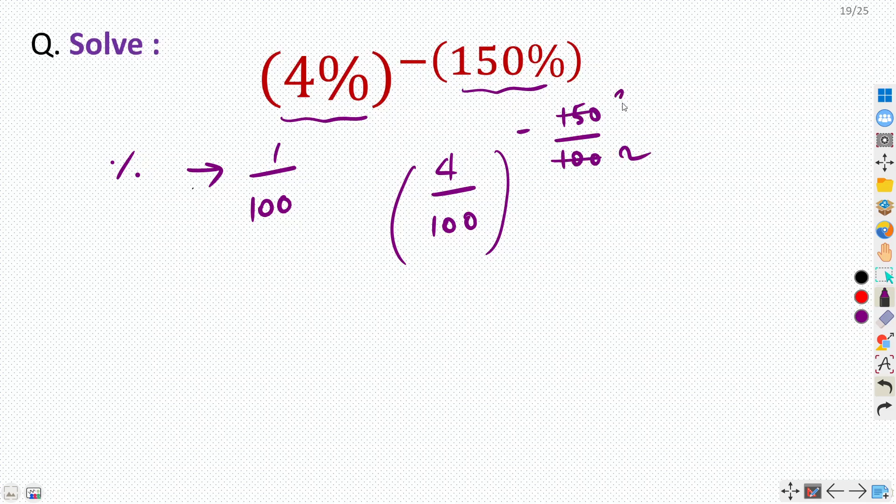So 50 into 2, 50 into 3, so can we rewrite this as 4 by 100 raised power minus 3 by 2.